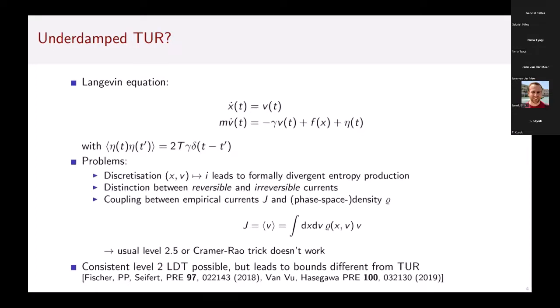If we want to derive the TUR for that, there are a couple of problems. One easy way would be to discretize the system, but then we have these transitions in x which formally look like irreversible transitions, and it's not obvious how one can get a non-divergent entropy production. Also we have to distinguish the reversible currents in equilibrium from the real irreversible currents. The problem is that for underdamped dynamics, the phase space density ρ and such a current observable are coupled.